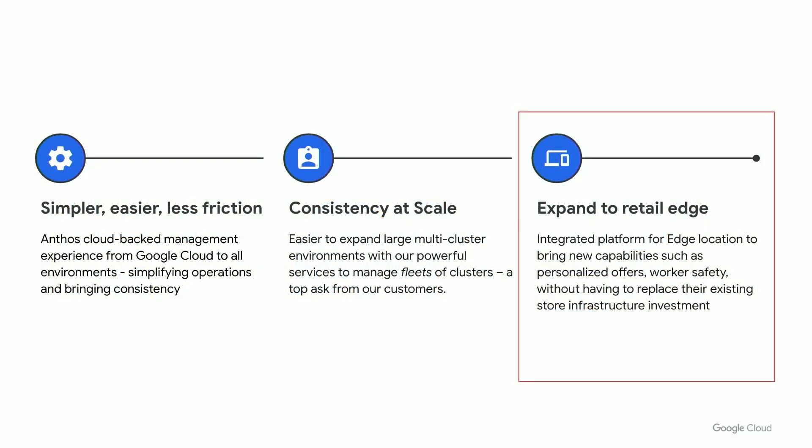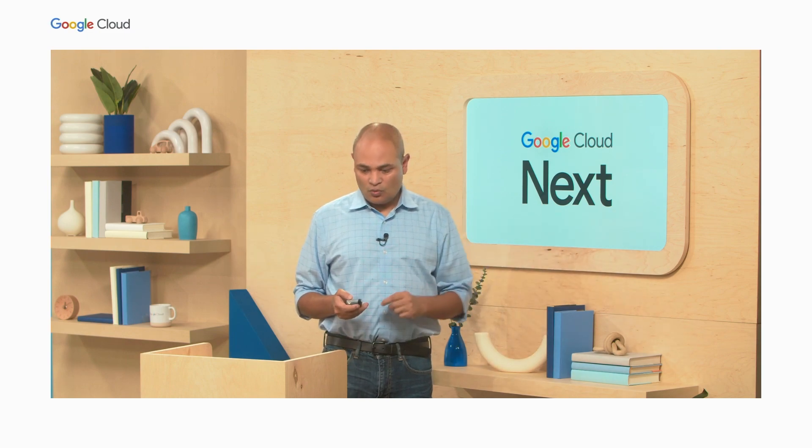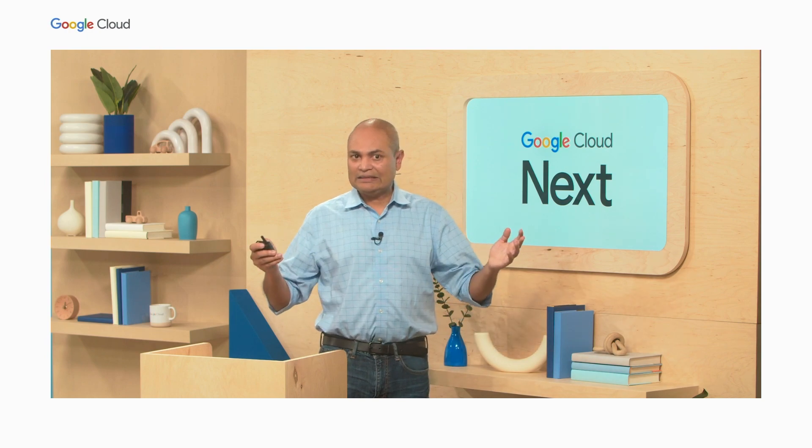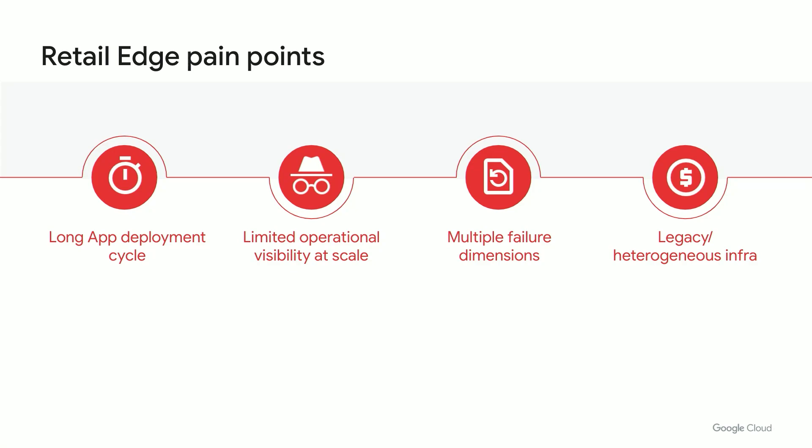Now let's talk about expansion to the retail edge. Customers want to deploy Anthos to retail edge because it allows them to fundamentally transform the retail edge — bringing personalized offers and worker safety without having to replace their existing store infrastructure. What are customers trying to solve for? Number one, the app deployment cycle is long. There is limited operational visibility at scale — imagine hundreds or thousands of locations. There are multiple failure dimensions, like someone accidentally knocking a power cable. You also have a heterogeneous mixed infrastructure: applications built to run on VMs and modern applications designed to run on containers. You need one way to manage all of that.